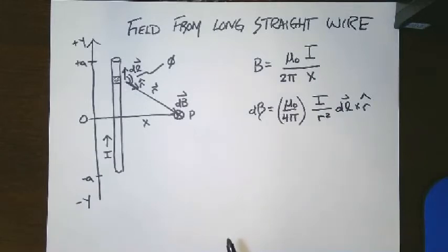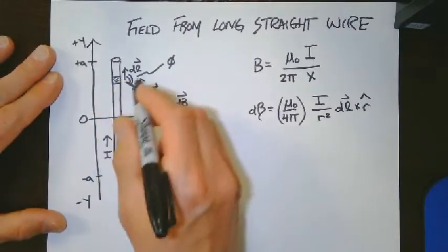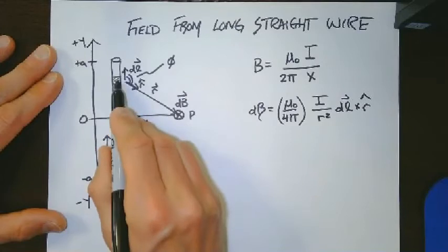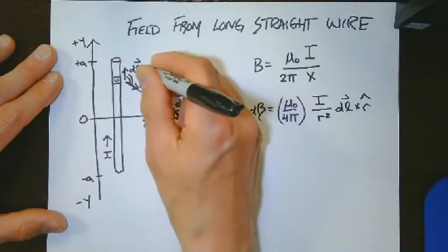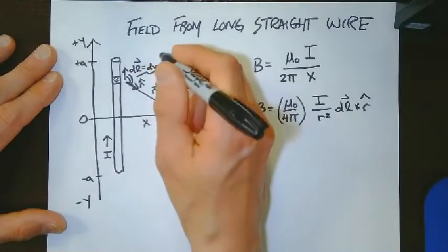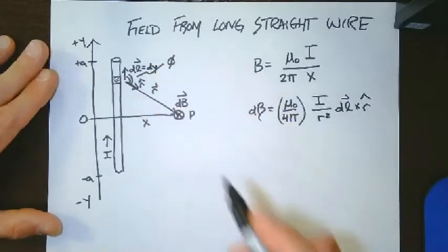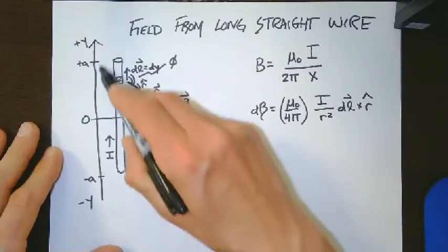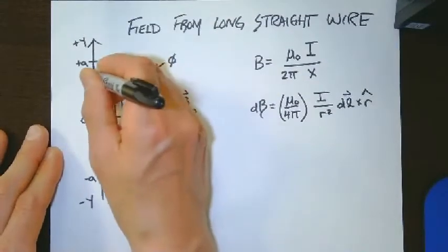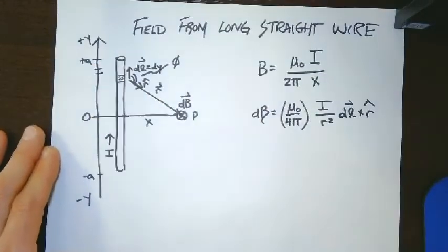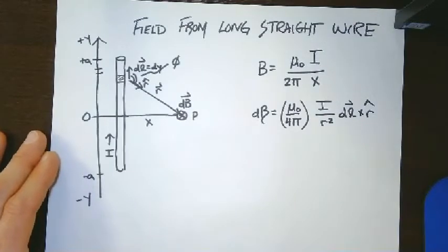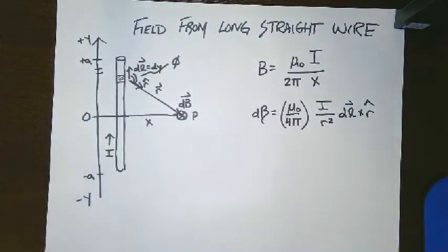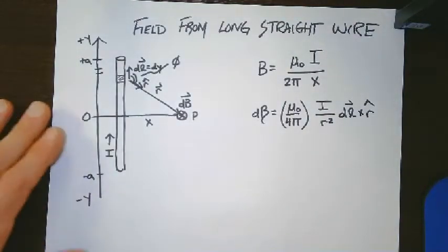I think the only other thing that we want to write down here is to note that DL, since DL points in the Y direction, DL is going to basically be DY. In other words, that small length of wire is actually corresponding to a DY, right, that you would have on this axis. And so we need that for the calculus part.